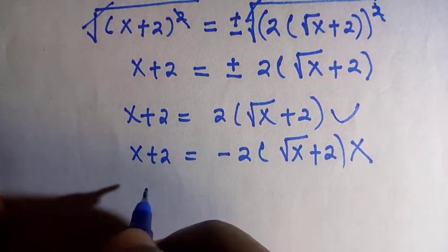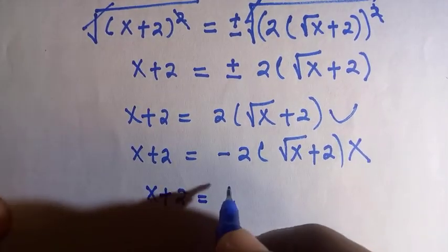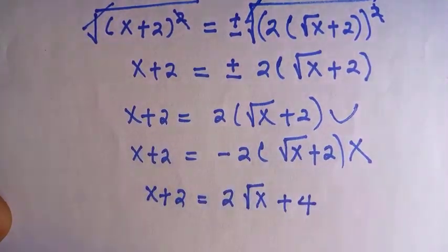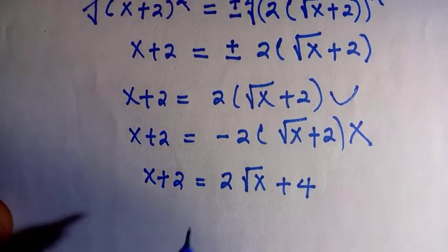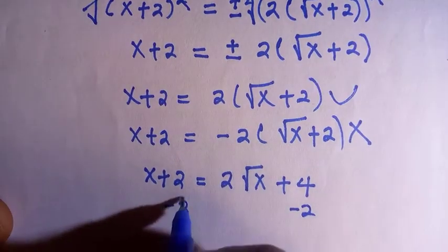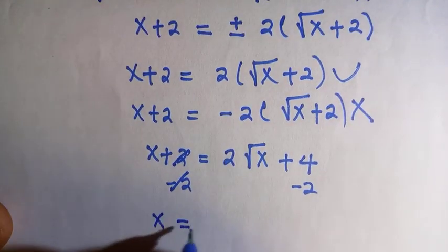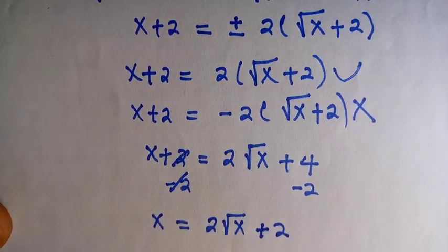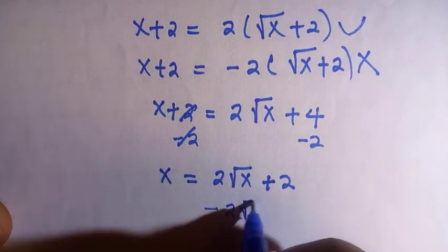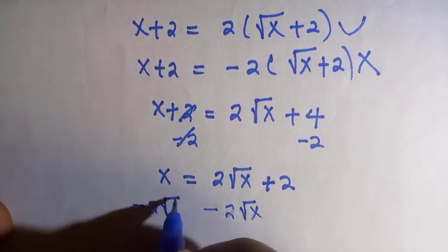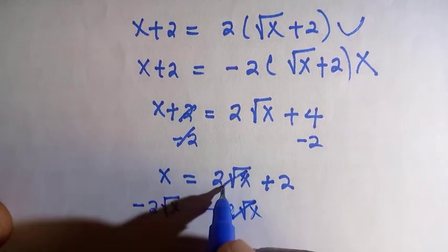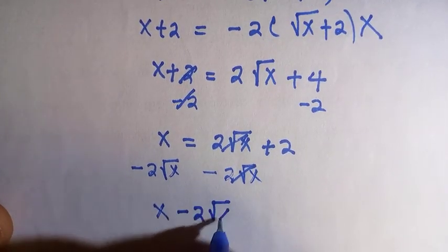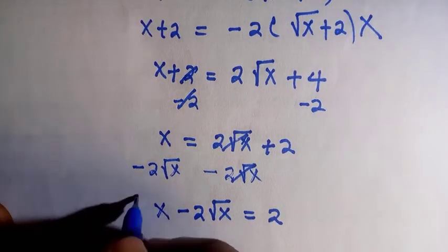We have x + 2 equals, by opening the parenthesis, 2√x + 4. By rearranging this, or let's say subtract 2 from both sides, we have x equals 2√x + 2. Again, let's subtract 2√x from both sides. At the left-hand side, we have x - 2√x equals 2.